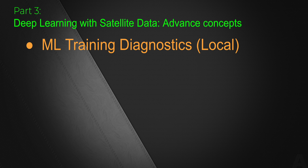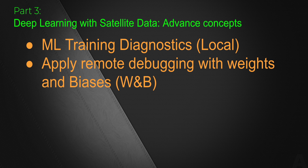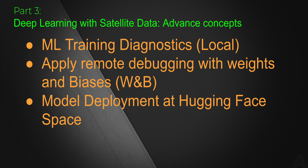First we will learn how to perform diagnostics for the deep learning process at the local level, and then we are going to apply remote debugging or remote diagnostics using Weights & Biases in the third step. We are going to deploy our deep learning model at Hugging Face Spaces, and our interface to model serving will be a Gradio-based UI. We will create a Gradio UI which will take a particular image from Google Maps, and our model will perform prediction to generate various landmark maps in the given image based on its training classes. Without further delay, let's start the first part on data processing for satellite imagery.